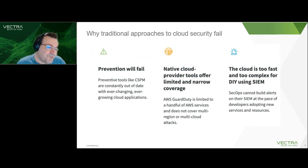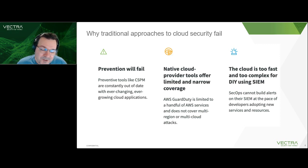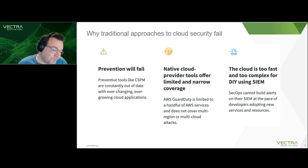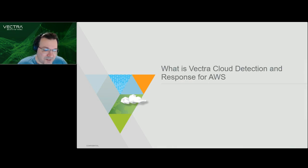So why are traditional approaches to cloud security failing? Cloud posture security management systems are constantly out of date. Cloud-native tools bring their own headaches. The use of a SIEM team developing use cases is always a step behind the attackers. Before we discuss any specific activities that an attacker might perform, we need to talk about what Vectra Cloud Detection and Response for AWS is.